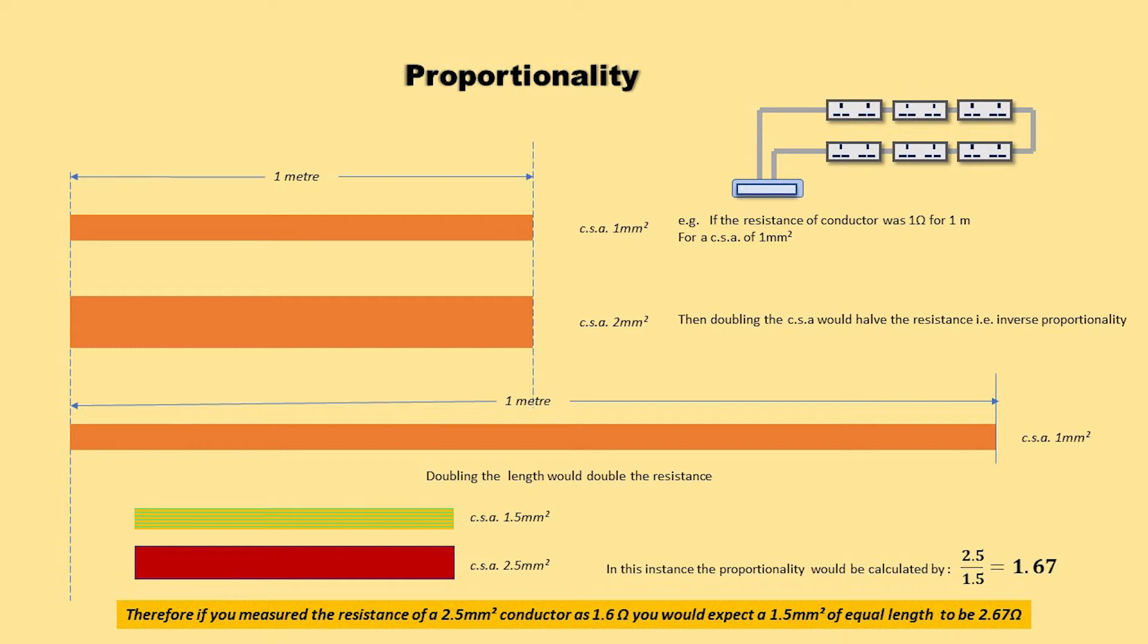Proportionality of conductors is useful as it enables us to check results as we go along. The example shown here indicates that if we double the length of a conductor of a given CSA, we double the resistance. If we double the CSA for a given length, we halve the resistance. A useful value to remember for a ring circuit is the proportional ratio between a 2.5 and 1.5 conductor, and that is 1.67. An example is given at the bottom of the slide.